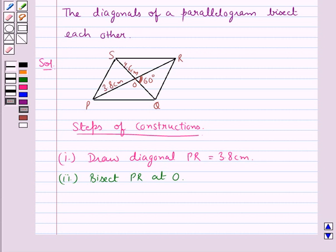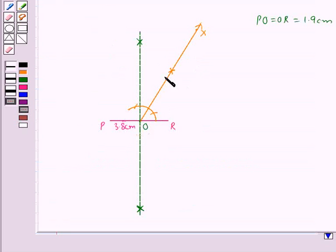Now since it is given that the angle between the two diagonals of measure 60 degrees, in the next step we make angle ROX equal to 60 degrees. So this angle ROX is of measure 60 degrees.